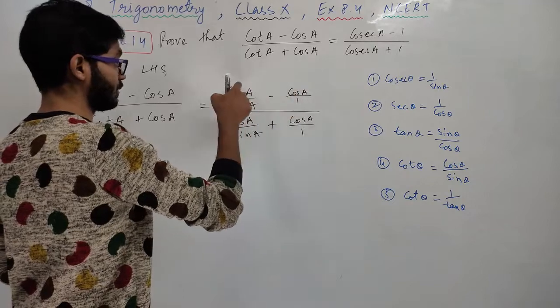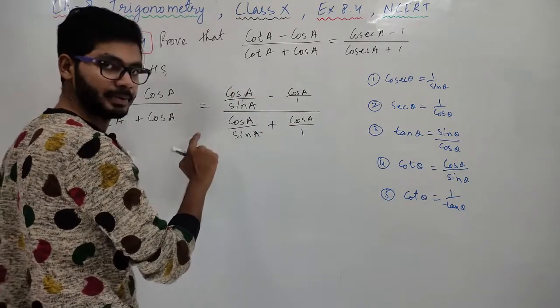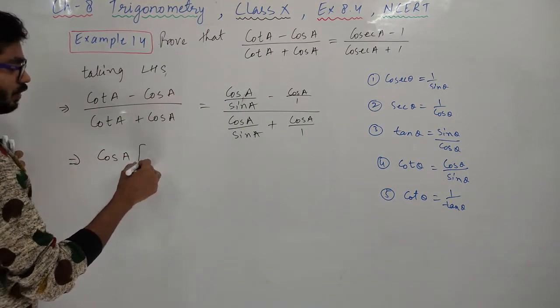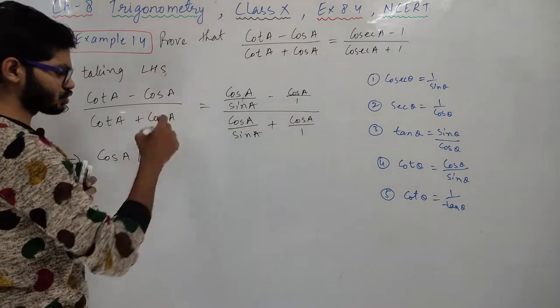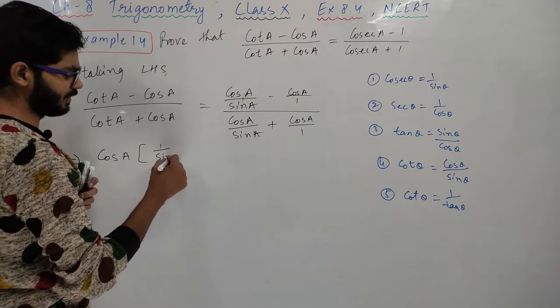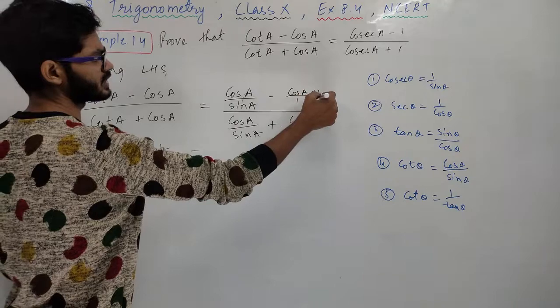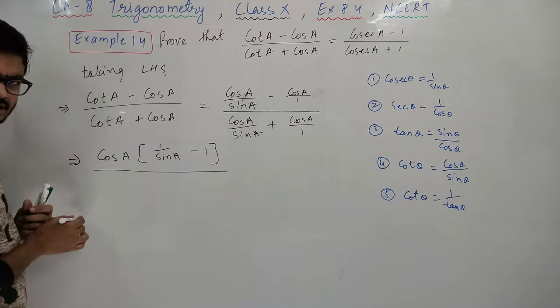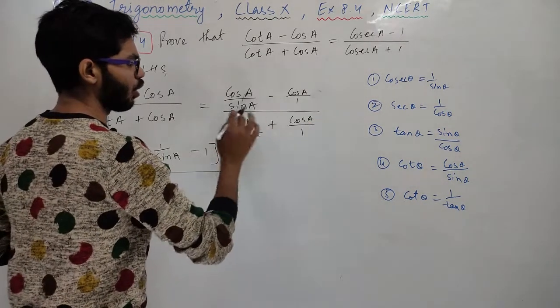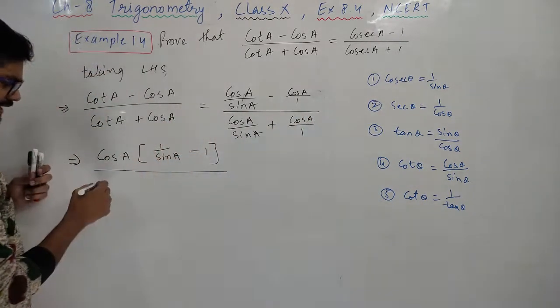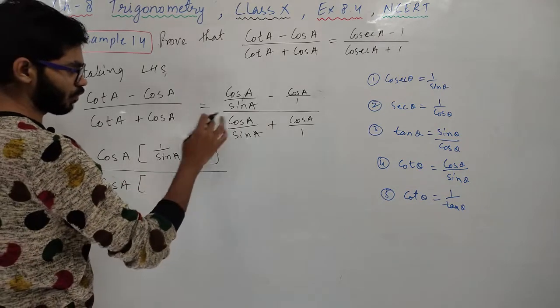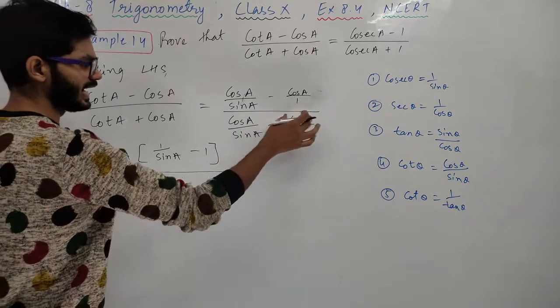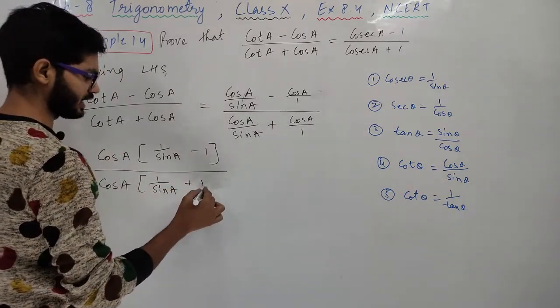Now look carefully, cos is common in numerator, here and here. So I'm taking cos common from numerator. When I take cos common from numerator, then one over sin A will remain, minus, look here nothing is there so its value is one. Here one over one will remain, or simply you can say one. Here also cos is common in denominator, so I'm taking cos common from there too. When you take cos common, what will remain here? One over sin A. When cos comes out from here, what will remain? One.